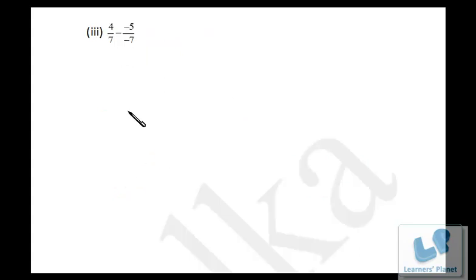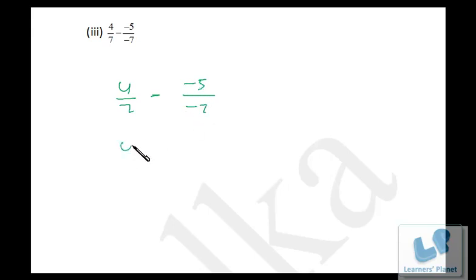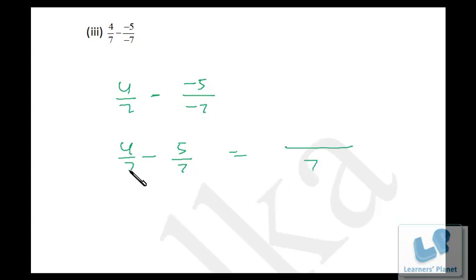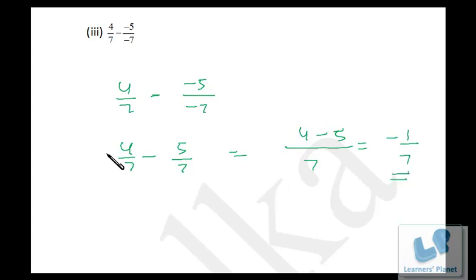Now here it's 4/7 minus minus 5 over minus 7. In the numerator and denominator a minus sign is there, so it will be cancelled. So the LCM will be 7, and both fractions have the same denominator. We add them as they are: 4 minus 5, so that's minus 1/7.